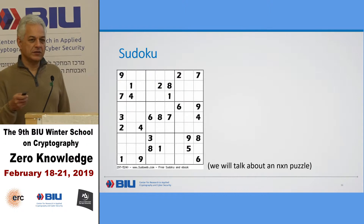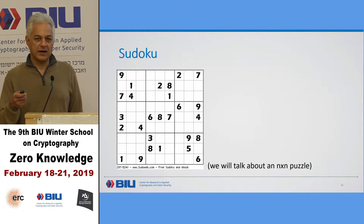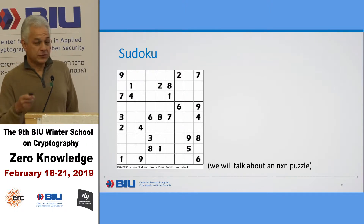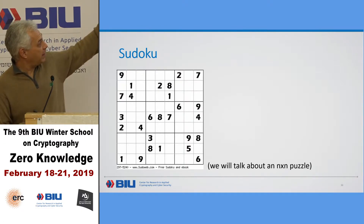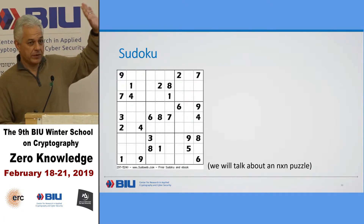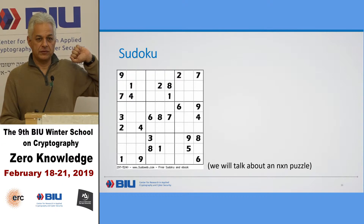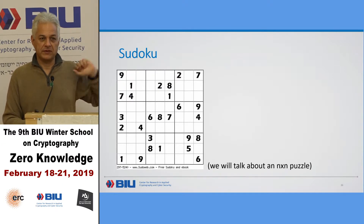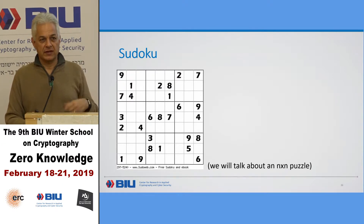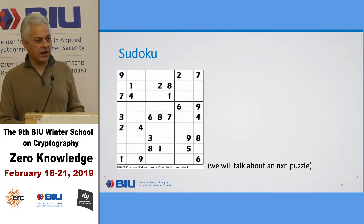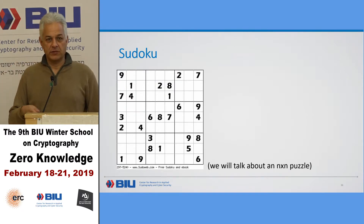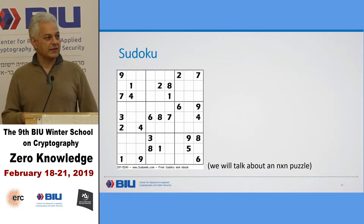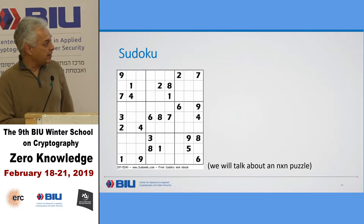You all know the Sudoku puzzle. You have this puzzle, some entries are open, and we have to fill all the other entries so that in each row, each column, and each subgrid, we'll have the numbers from 1 to 9. And because we're computer scientists, we can think about the general case.